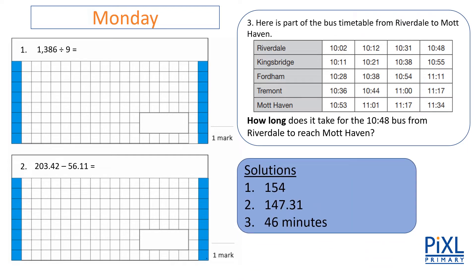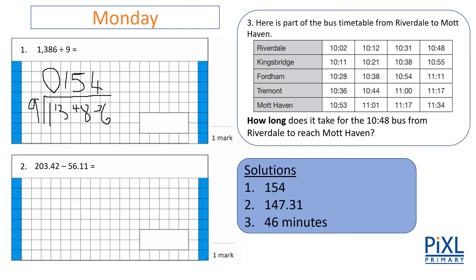Let's see our answers. Our first question: we've got 1386 and we're dividing it by nine. You should have got the answer of 154. I'm going to use the bus stop method. Nine into one can't go, so we move the one over to make 13. Nine into 13 goes once — remainder four. Nine into 48 goes five times — remainder three. Nine into 36 goes four times. So my answer is 154.